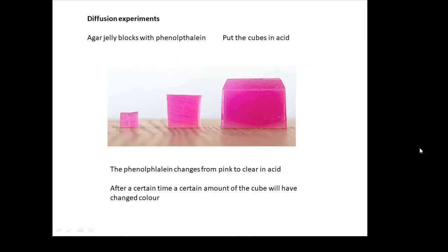This is a more common experiment that's important to know. These jelly blocks contain phenolphthalein. You should remember phenolphthalein from titrations in first year. It's an indicator that starts off purple but becomes clear when it goes in acid.